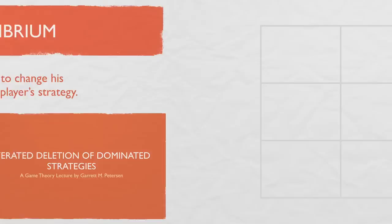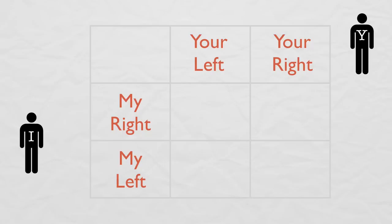Now let's look at a simple game for an example of a Nash Equilibrium. Let's say that you and I are walking in opposite directions down a hallway. I can go to my left or to my right, and you can go to your left or to your right. If we go in opposite directions, we'll walk into each other.